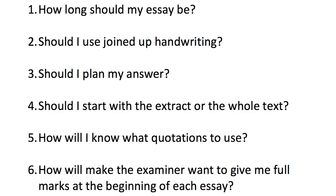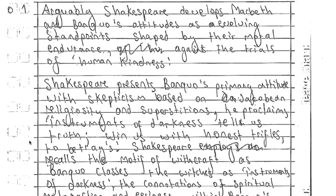Let's look at the beginning of his Macbeth answer: 'Arguably, Shakespeare develops Macbeth and Banquo's attitudes as evolving standpoints shaped by their moral endurance against the trials of human kindness.' So how does this automatically get the examiner thinking they want to give this full marks? Well, firstly he's gone straight in and linked a quotation to Shakespeare's purpose.